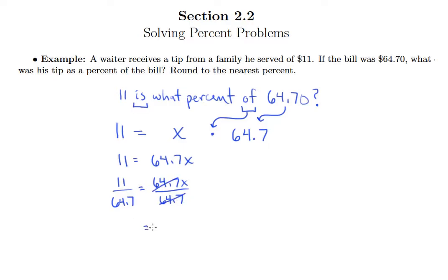So X is equal to the quotient of these numbers. So we need to actually do that division. So over here, we'll say 11 divided by 64.7. And of course, we can't divide by a decimal. So go ahead and move the decimal 1 to the right in 64.7. But that means we better move it 1 to the right in 11 as well.